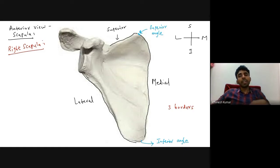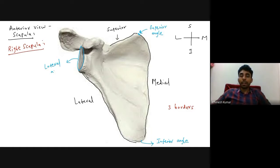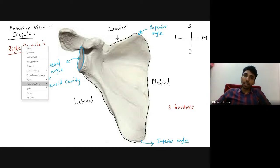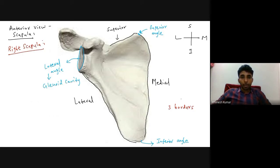The third angle is the lateral angle of the scapula. As you can see in this diagram, the lateral angle of the scapula is not pointed — it is actually enlarged to form one shallow depression called the glenoid cavity. Please remember: the lateral angle of the scapula is enlarged to form the glenoid cavity.